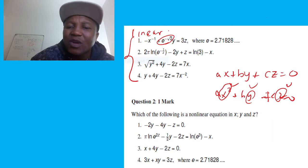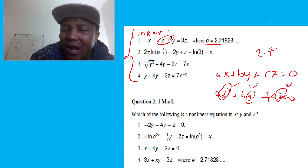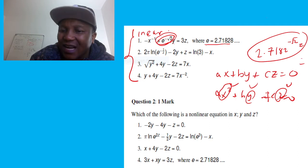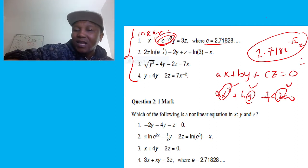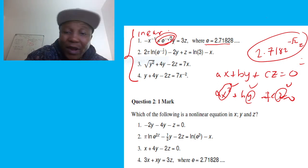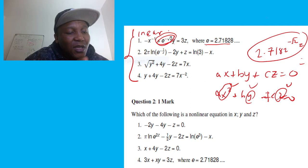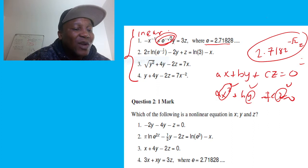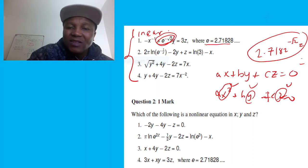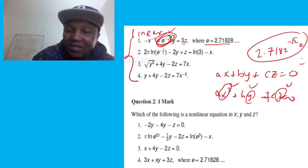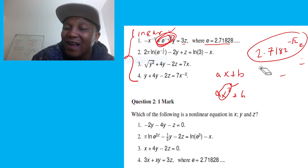Let me start with the first case. The coefficient here — e to the power of negative square root of 2 — is just a number, because e is 2.71. If you put 2.71 to the power of negative square root of 2 into a calculator, it gives an actual number, approximately 0.243. So that part is just a constant number.